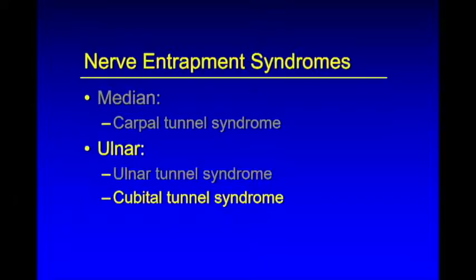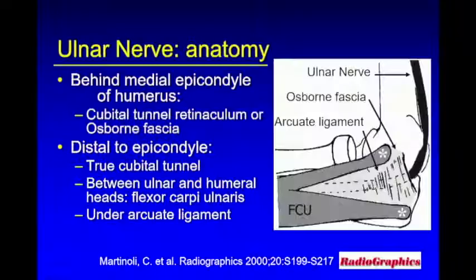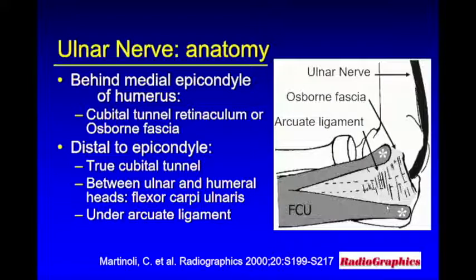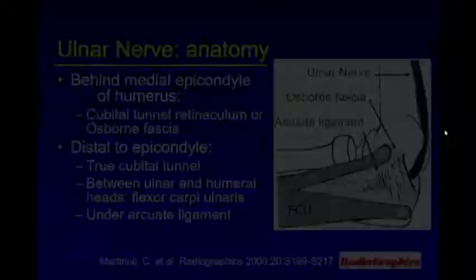Cubital tunnel syndrome is the second most common nerve entrapment of the upper extremity after carpal tunnel. Looking at the elbow anatomy, the ulnar nerve goes behind the medial epicondyle — but that's not the area that's entrapped. It's actually more distal: the nerve goes underneath Osborne's fascia, and the true cubital tunnel is defined by the arcuate ligament and the two heads of the flexor carpi ulnaris. Because the nerve is enlarged at and proximal to the entrapment site, we look behind the epicondyle to find the increased nerve size.